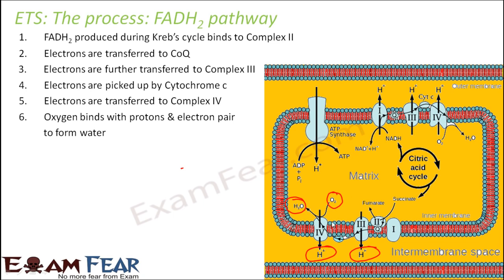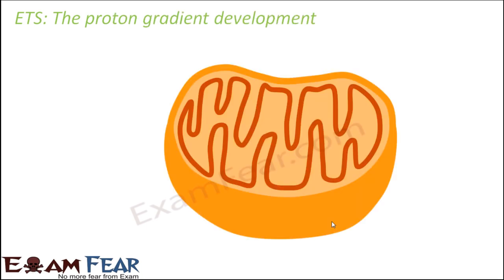Please understand how the proton gradient develops, because that is the most important part. Once the proton gradient is developed, ATP synthesis is straightforward — based on the chemiosmotic hypothesis, which we covered in our lesson on photosynthesis. When I say a proton gradient is developed, I mean that outside the inner membrane in the intermembrane space, the concentration of protons increases greatly, while the concentration in the matrix is quite low. Because of this proton gradient, ATP synthesis takes place by the chemiosmotic hypothesis.